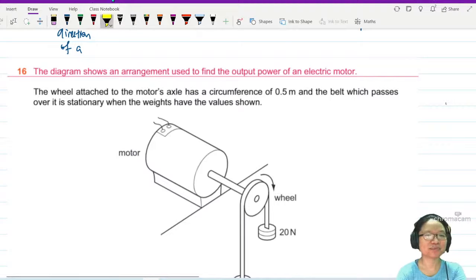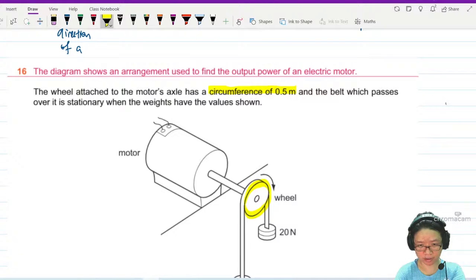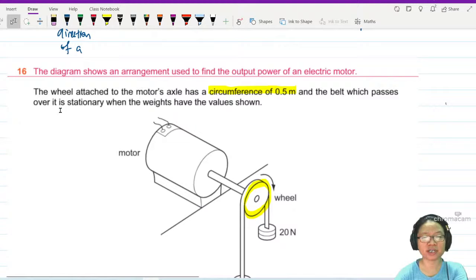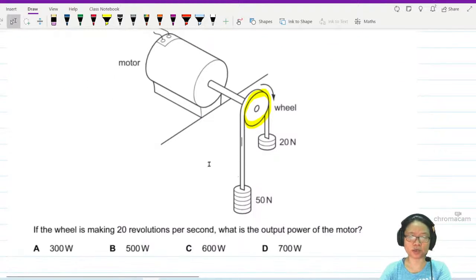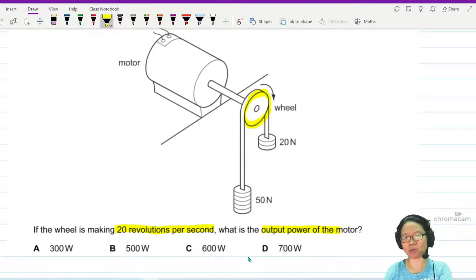Okay, you have a circumference of 0.5 meter, meaning this wheel, the outside, the whole thing here, it's 0.5 meter. And the belt that passes over it is stationary. And the weights have the value shown. If the wheel makes 20 revolutions per second, what is the output power of the motor?